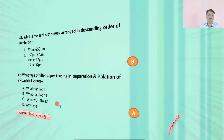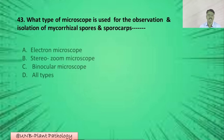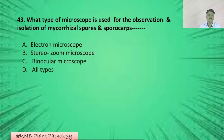Question number forty-three: What type of microscope is used for the observation and isolation of mycorrhizal spores and spore characters in mycorrhizae study? A: electron microscope; B: stereo zoom microscope; C: binocular microscope; D: all of the above. The correct option is B: stereo zoom microscope.